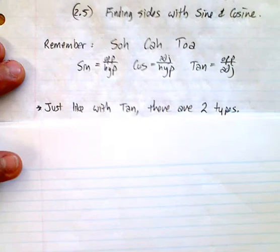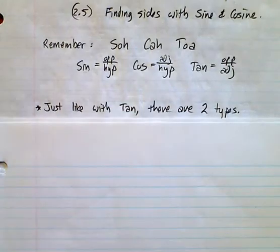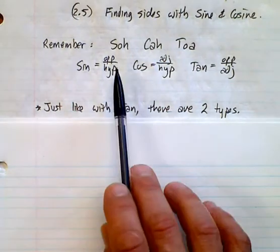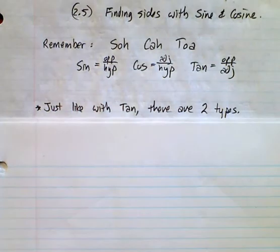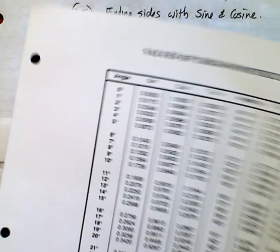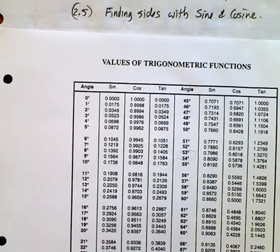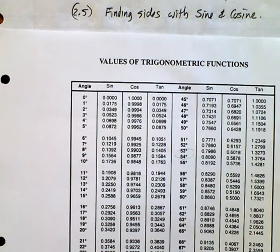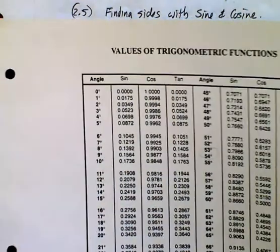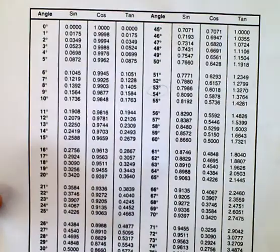Now, just like tan, we've looked with tan, we have two different types of questions. Now what you've looked at so far with sine and cosine are finding the angles given the opposite and the hypotenuse. How do we find the actual size of the angle? Some of you have used the trig tables, some of you know how to use your calculators. I suggest you learn how to use both.